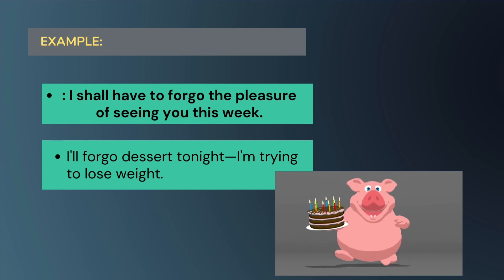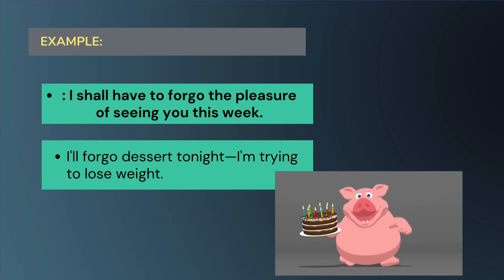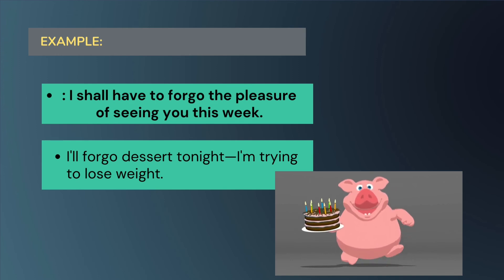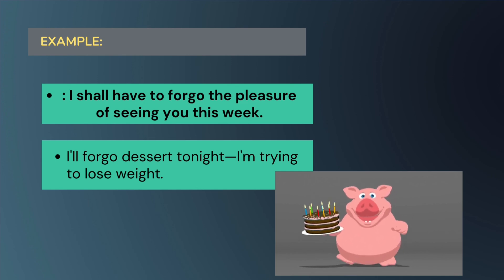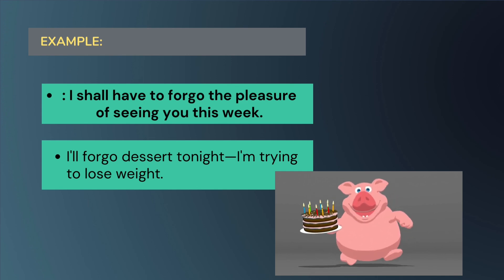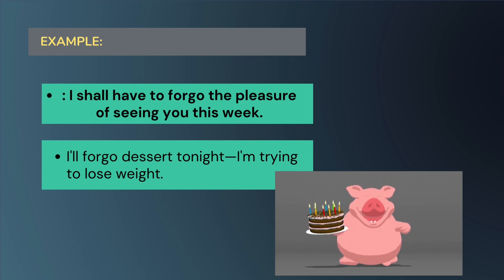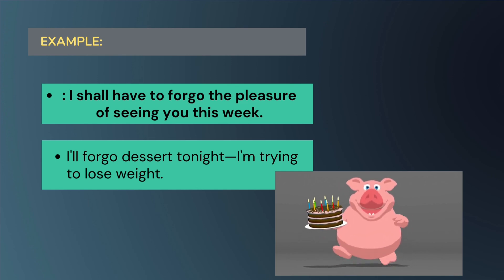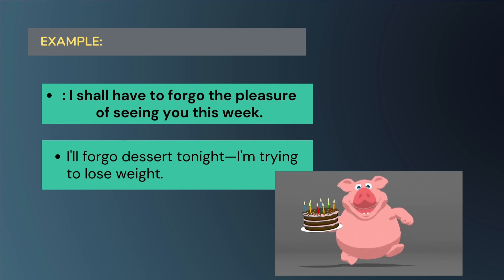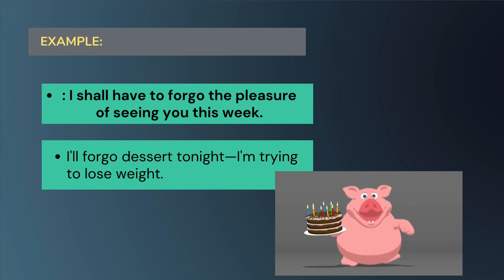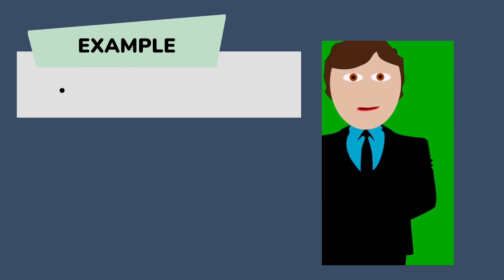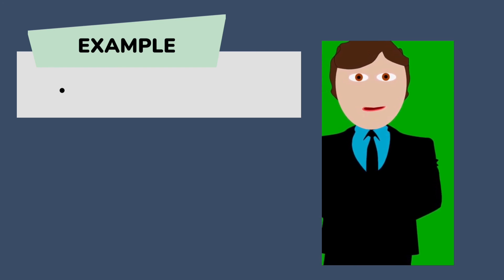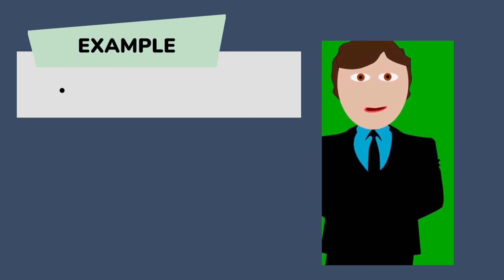Examples: 'I shall have to forgo the pleasure of seeing you this week.' And: 'I shall forgo dessert tonight — I am trying to lose weight' — meaning I have to go without dessert in order to lose weight. That's all for today, hope we will meet in our next lesson.